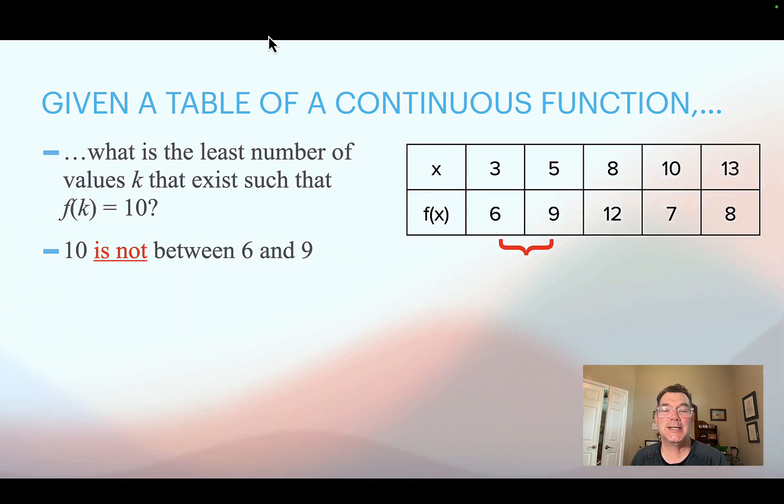But since 10 isn't between 6 and 9, I'm not sure whether I'm going to hit a y-value of 10 or not. I might, I might not. But I can't say for sure that I will. If I look at the second sub-interval between x equals 5 and x equals 8, then I've got the y values of 9 and 12. And 10 is between 9 and 12. So I know that somewhere between x equals 5 and x equals 8, I'm going to hit a y-value of 10 at least once.